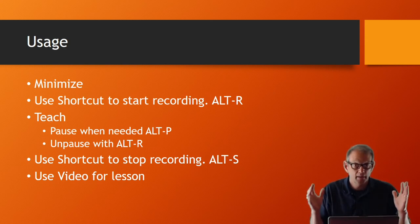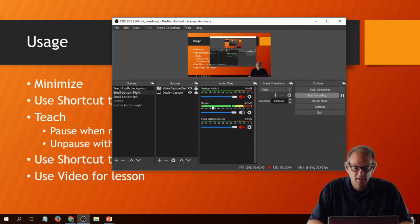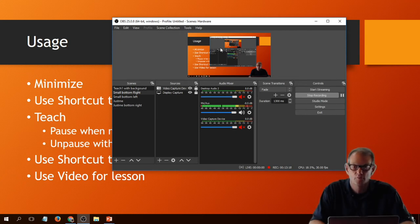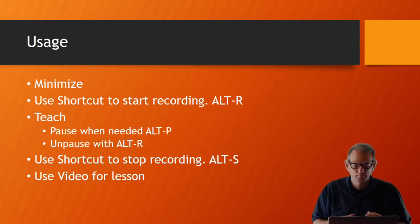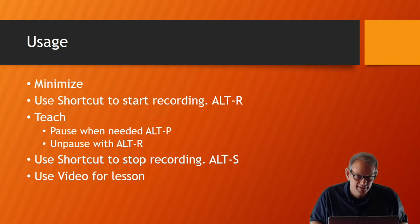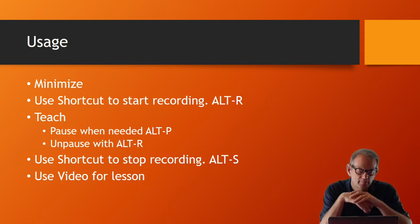Once setup is complete, all you do is open OBS Studio and make sure the sound bar is bouncing. I turn off Desktop Audio so computer sounds don't end up on the video, but the mic sound bar should be visible. At school I minimize it and it just runs in the background. When I'm ready to record I hit Alt+R, do my lesson, and hit Alt+S when done.